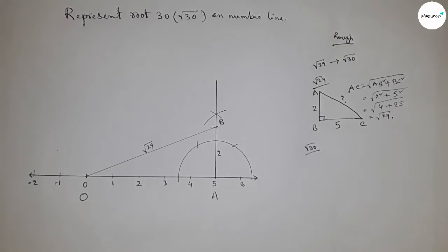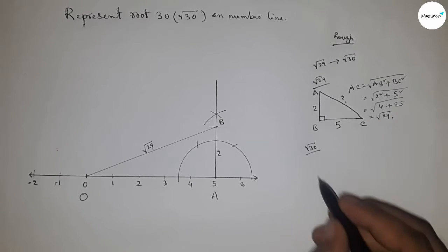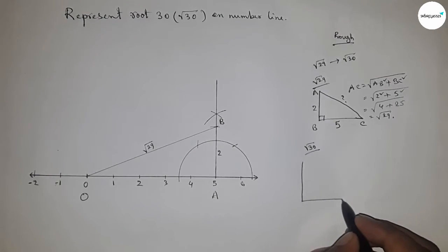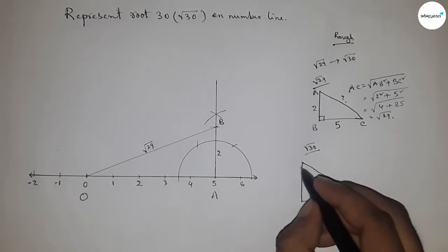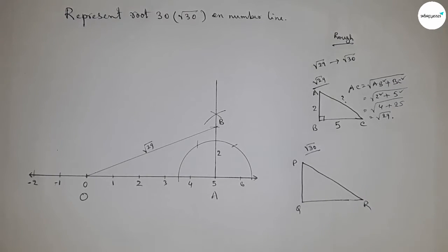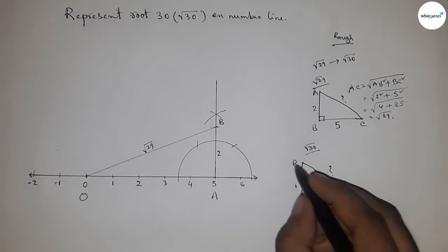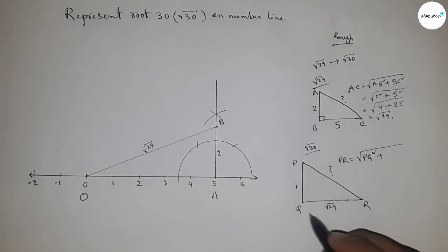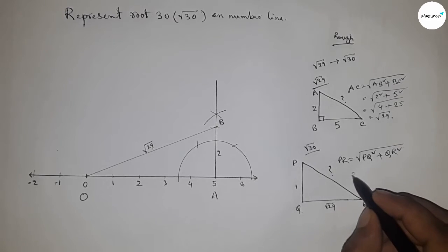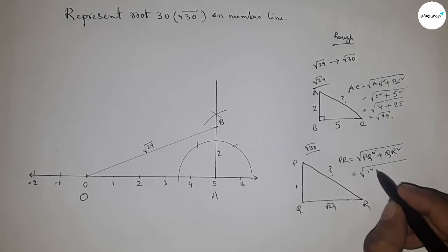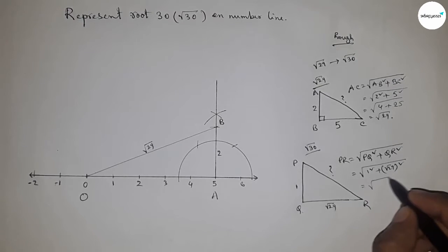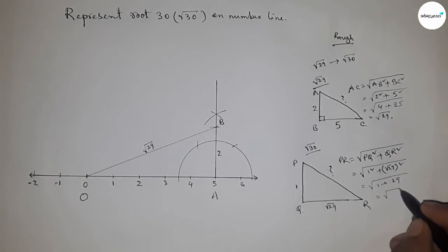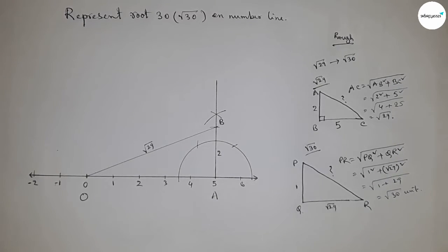Next, to represent root 30: if there is a right angle triangle PQR with base root 29 and height one unit, then by Pythagoras theorem, hypotenuse PQ equals root over base squared plus height squared — that is root of one squared plus root 29 squared, which equals root of one plus 29, giving us root 30.